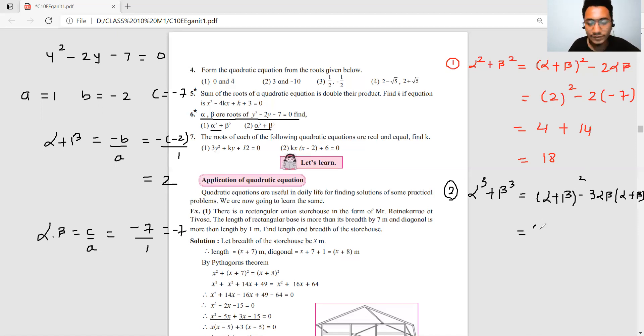Alpha plus beta value is 2, so 2 cube is 8. Minus 3 multiply with minus 7 multiply with 2. Minus minus becomes plus, 3 times 7 is 21, 21 times 2 is 42. So the answer is 50.